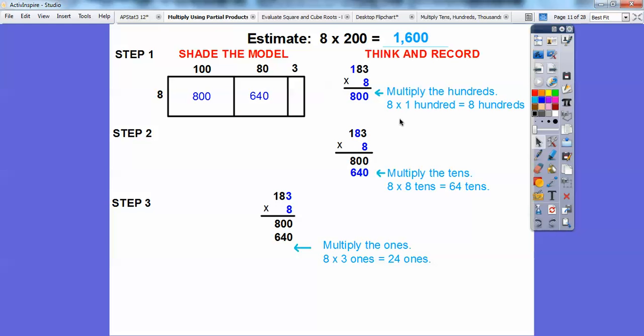Now we're going to multiply the 1s. The 3 is in the 1s. So 8 times 3 is going to be 24 ones. So 24 is going to go right here. I shaded that in. So now what we're going to do is add all the partial products. 800 plus 640 plus 24.